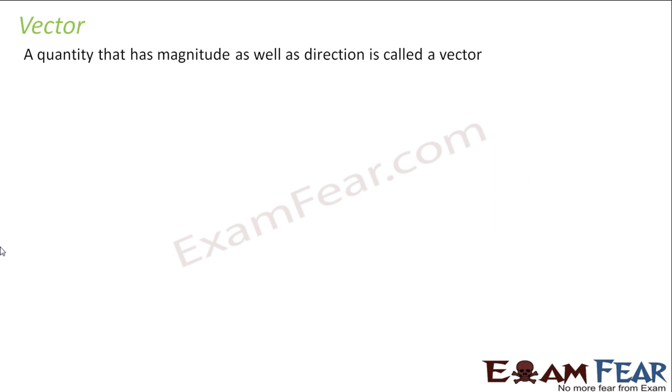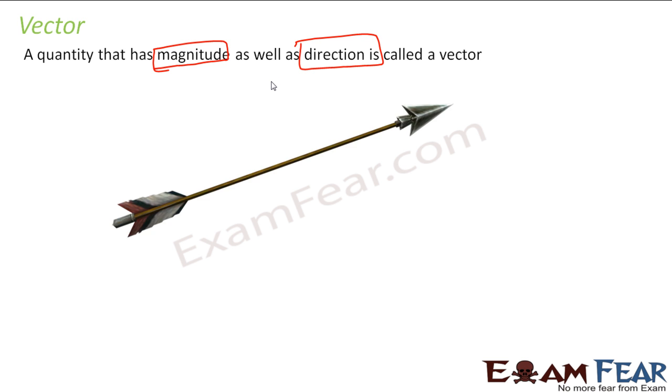So, vector is nothing but, as I told, is a quantity that has magnitude as well as direction. So, if something has magnitude and direction, it is called vector. The vector is represented by this arrow. This is the tail and this is the head.